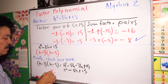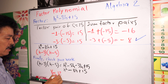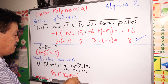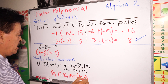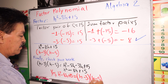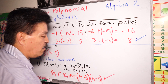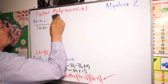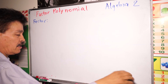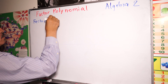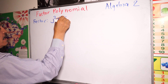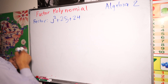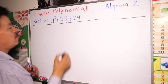Yes, this is correct — h squared minus 8h plus 15 equals (h minus 3)(h minus 5). Now let's solve another problem. It's very simple. We have j squared plus 25j plus 24. Factor this.